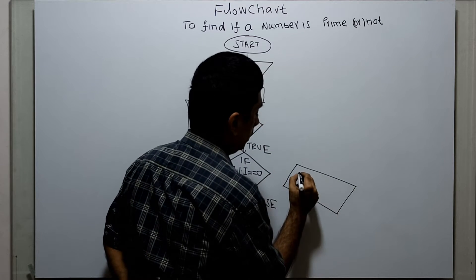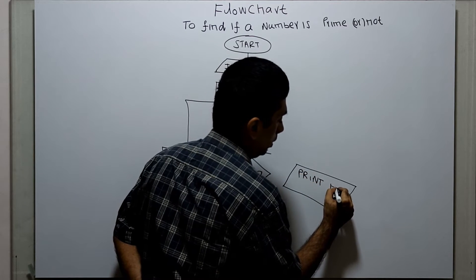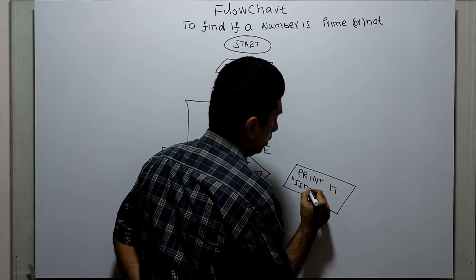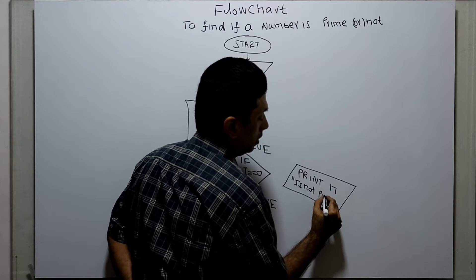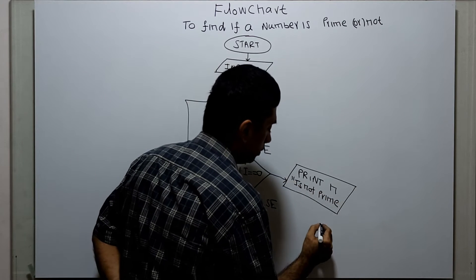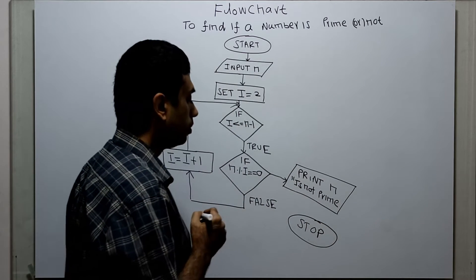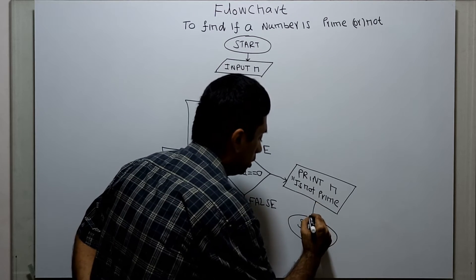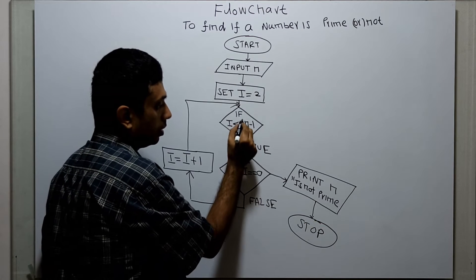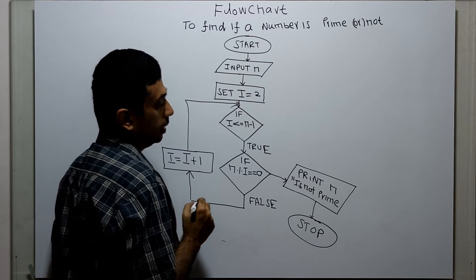If n modulo i equal to zero is true, I am printing: the number n is not prime. Then the flowchart ends. If i less than or equal to n minus one is false, that means i is greater than n minus one.